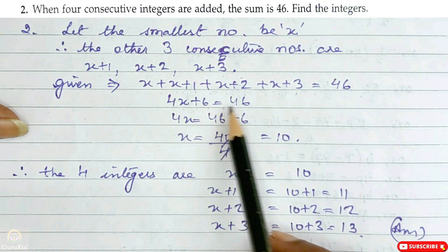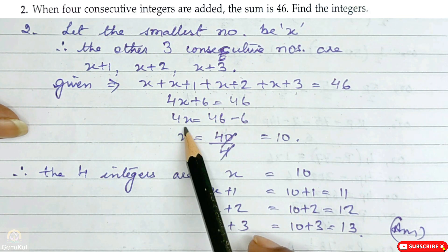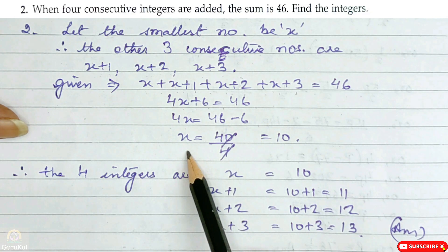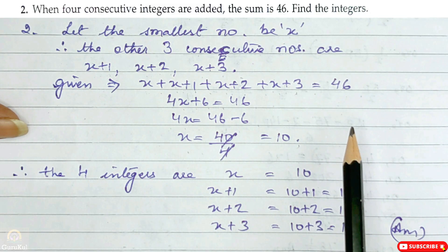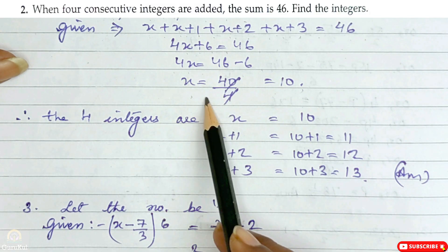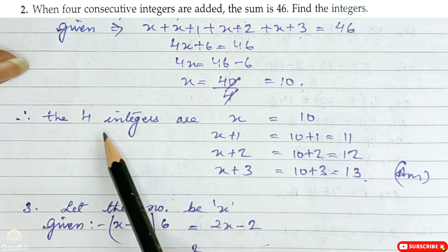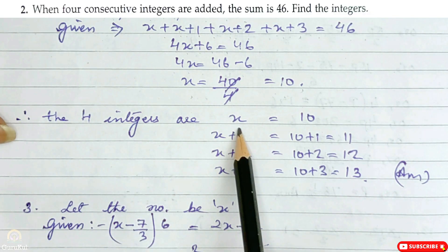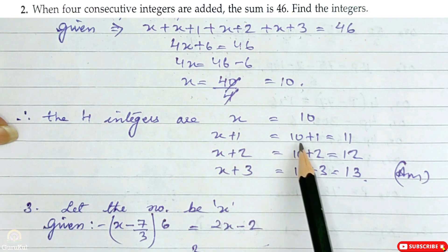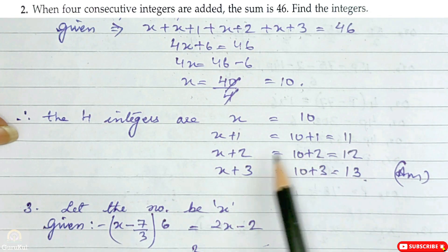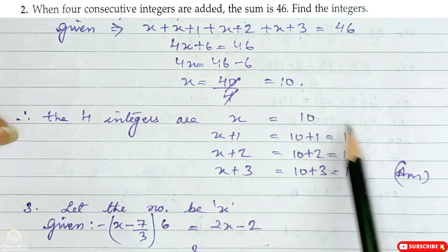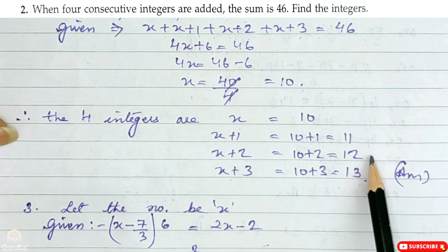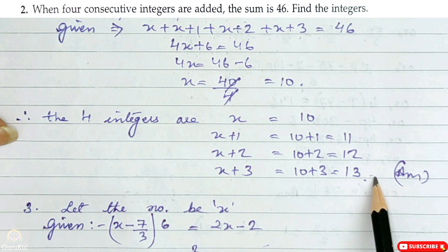4x plus 6 is equal to 46, or 4x is equal to 46 minus 6. So x is 40 divided by 4, which is 10. This is the smallest number. Therefore the 4 integers are x = 10, x+1 = 11, x+2 = 12, and x+3 = 13. So we have 4 consecutive numbers, and this is the answer.